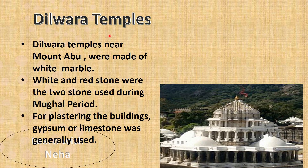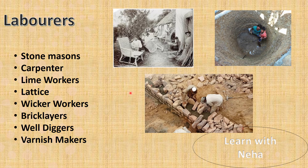The Dilwara temples in Mount Abu are made of pure white marble. For plastering buildings, gypsum or limestone was generally used, while white and red stone were the two stones used during the Mughal period. Other materials used for construction include wood, iron cramps, iron door knockers, etc. Various types of laborers were employed in the construction and maintenance of such monuments — stone masons, carpenters, lime workers, lattice and wicker workers, bricklayers, well diggers, varnish makers, etc.